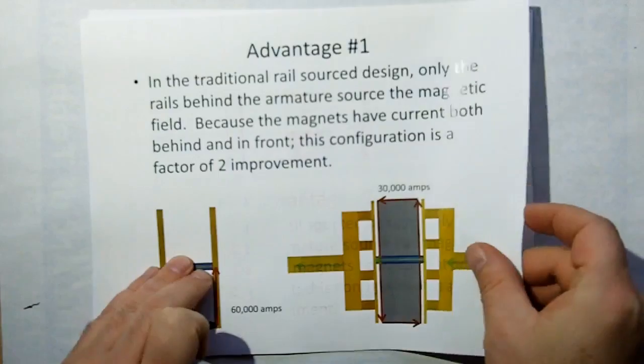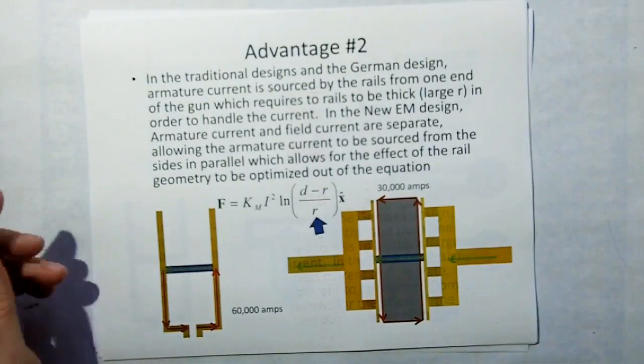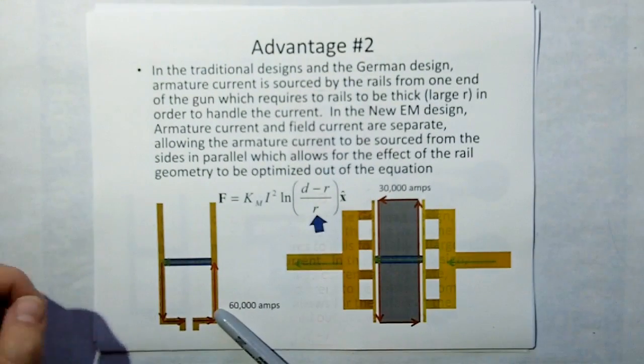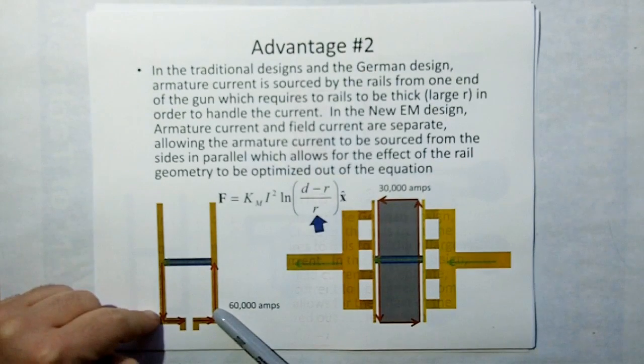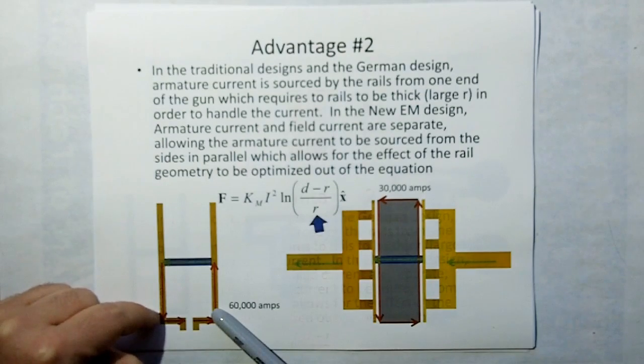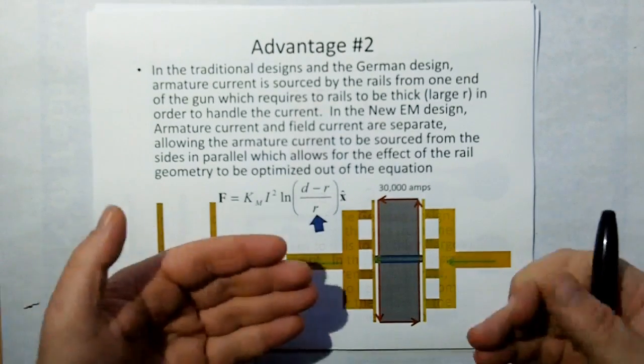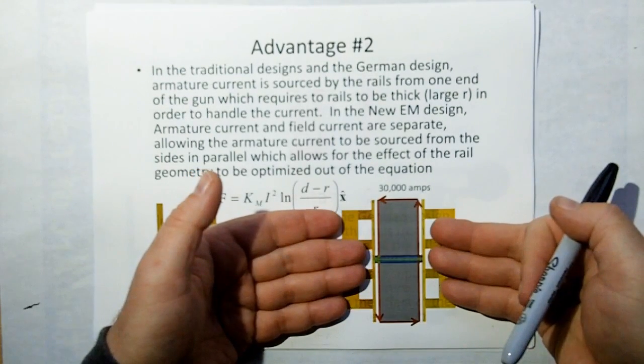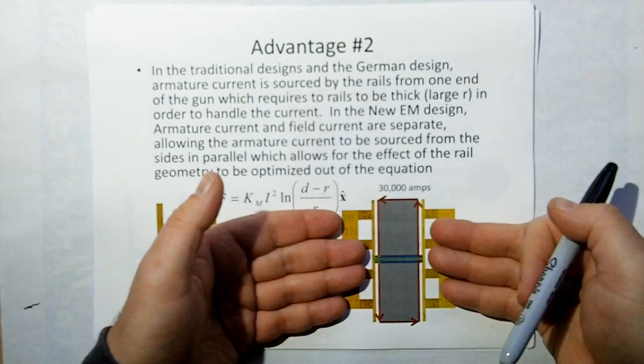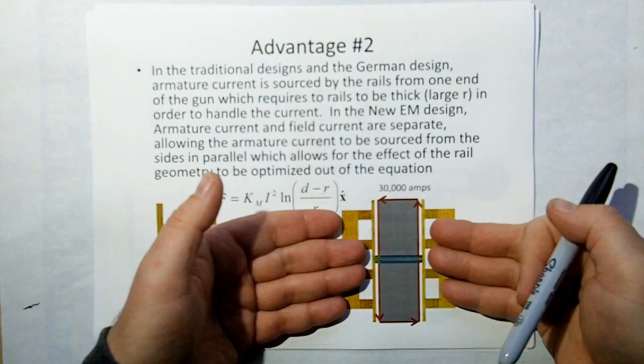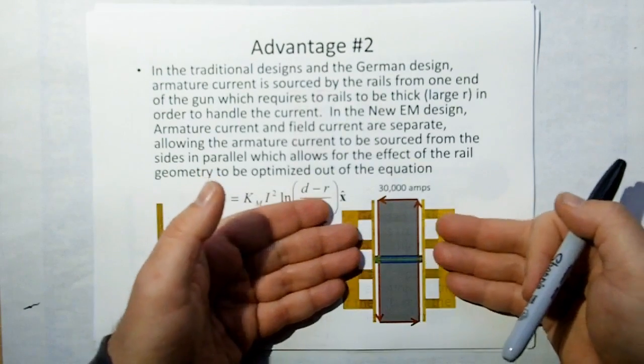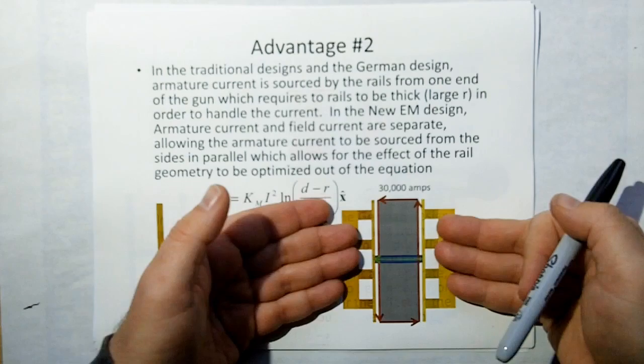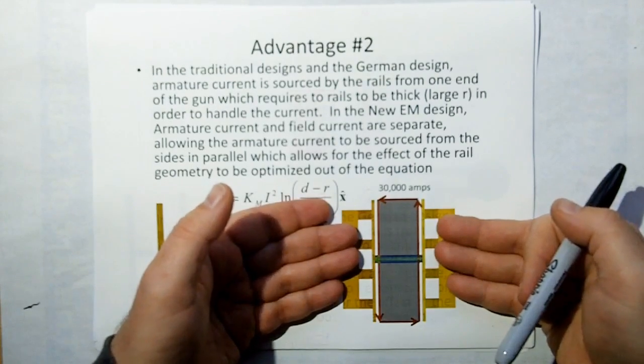There's a second advantage to the new electromagnetism design. Because even in the German design and the traditional design, you still have to source the armature current from the rails. That requires the rails to be thick in order to handle the current. This way here, we can actually make thinner rails because we're going to parallel feed the rails. And with a thinner rail, as you saw in the calculations we did before, the smaller the rail, the more efficient the design. This way here, we can have very thin rails because they're going to be N-fed. And therefore, they're not going to be impeding on the magnetic field produced by the magnets.